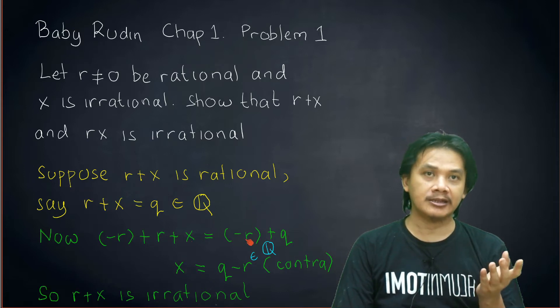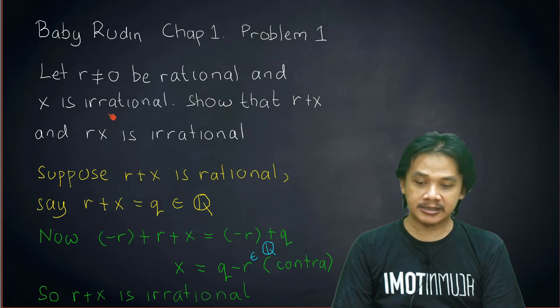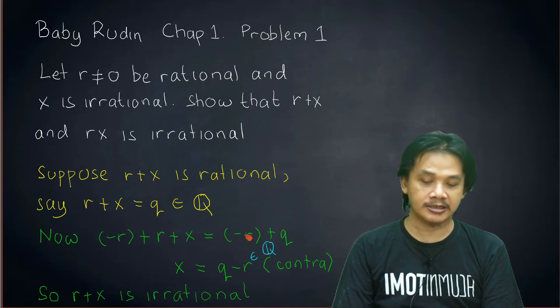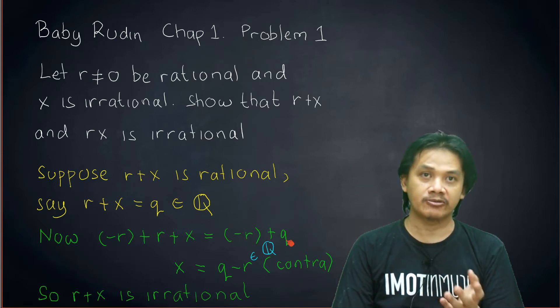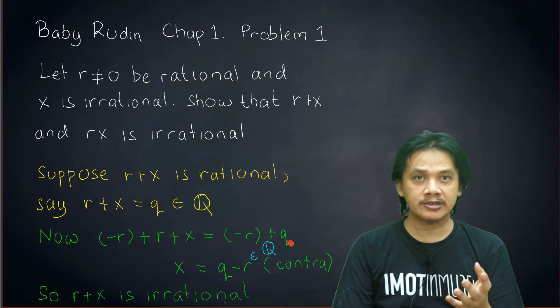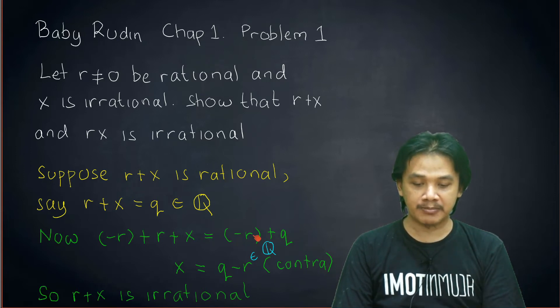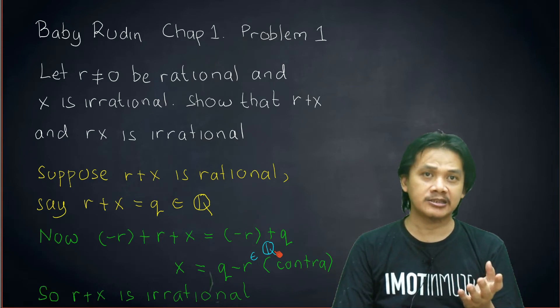Meanwhile, on the right-hand side, since r is rational, then -r is rational as well. So this guy is rational and that guy is also rational. Since ℚ is a field and it is closed under addition, then -r+q, which can be written as q-r, is an element of ℚ as well. But that's a contradiction.